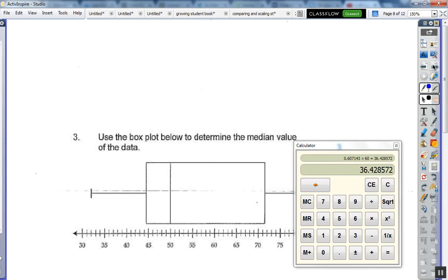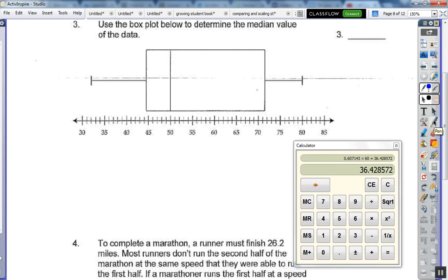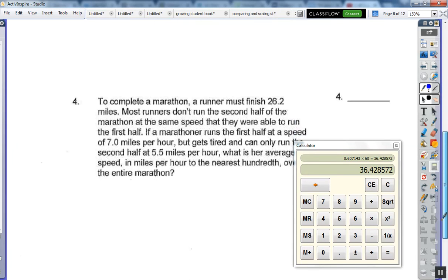Alright, number 3, easiest problem in the lot. What is the median value? So this is a box plot. This is the minimum, this is the lower quartile, this is the median, this is the upper quartile, and this is the max. And we want the median, which is 50. Whew, that was quick and easy.